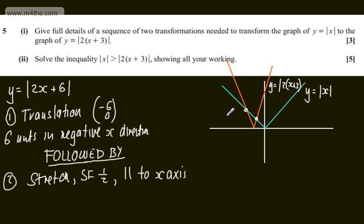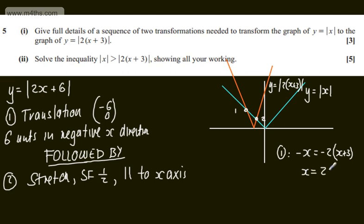I'll label these intersection points one and two. At point one, we have the negative branch of |2x + 3| and the negative branch of |x|, so: -x = -(2x + 3), which gives x = 2x + 6, and therefore x = -6. That's our first critical value.